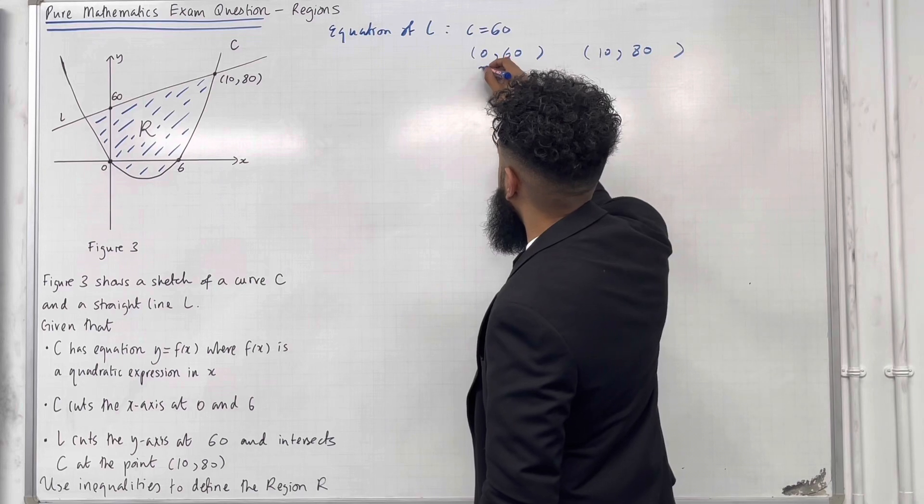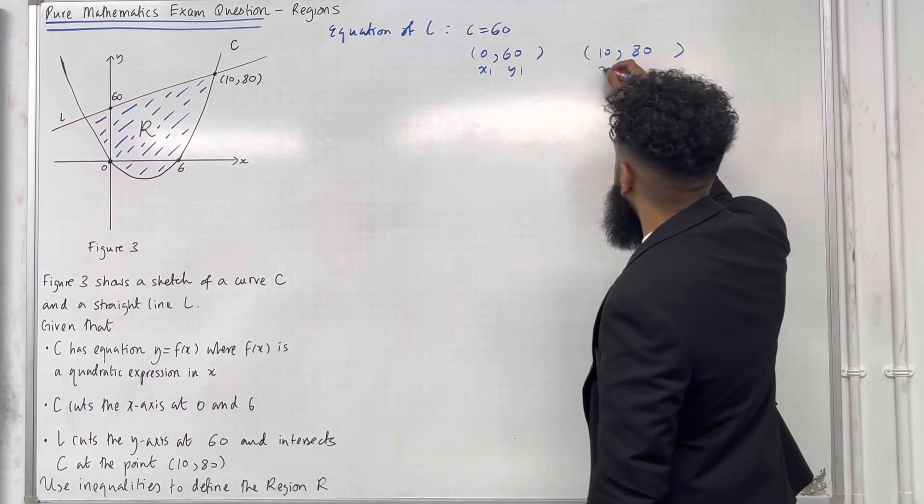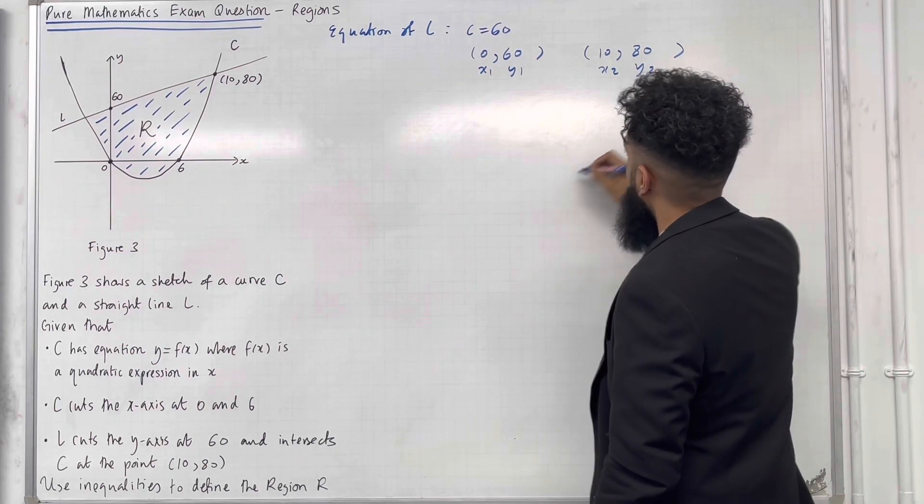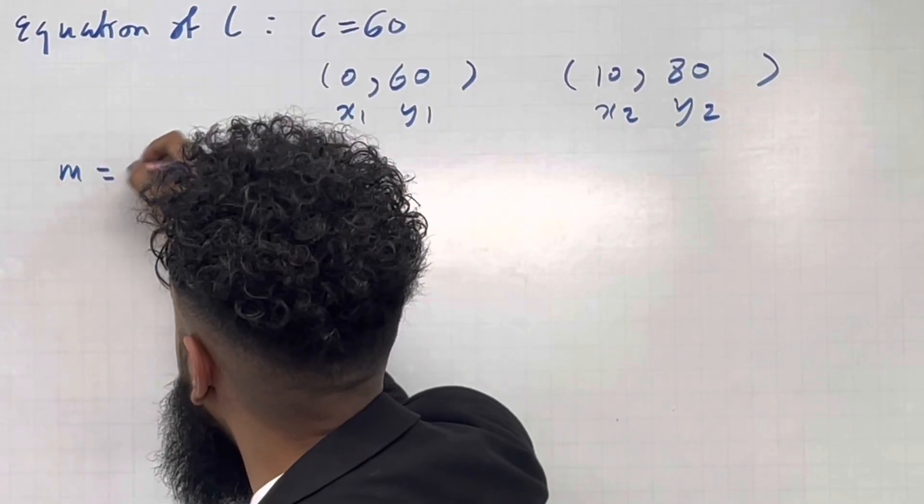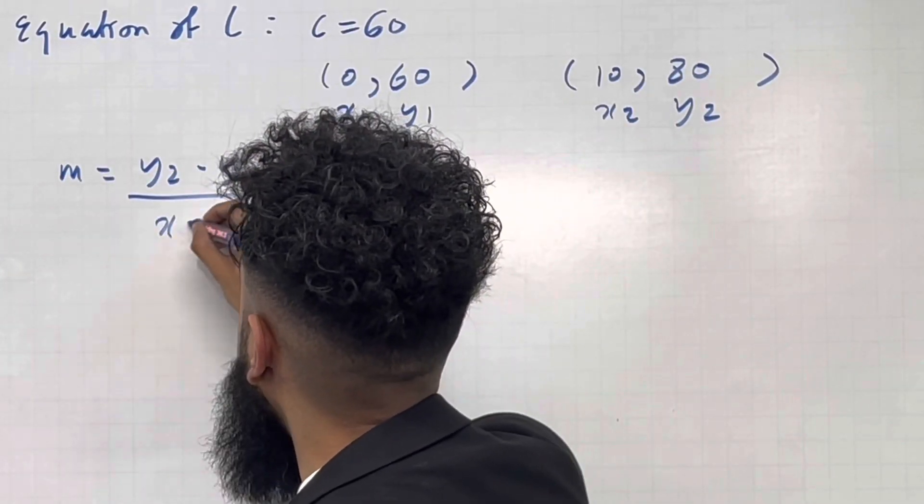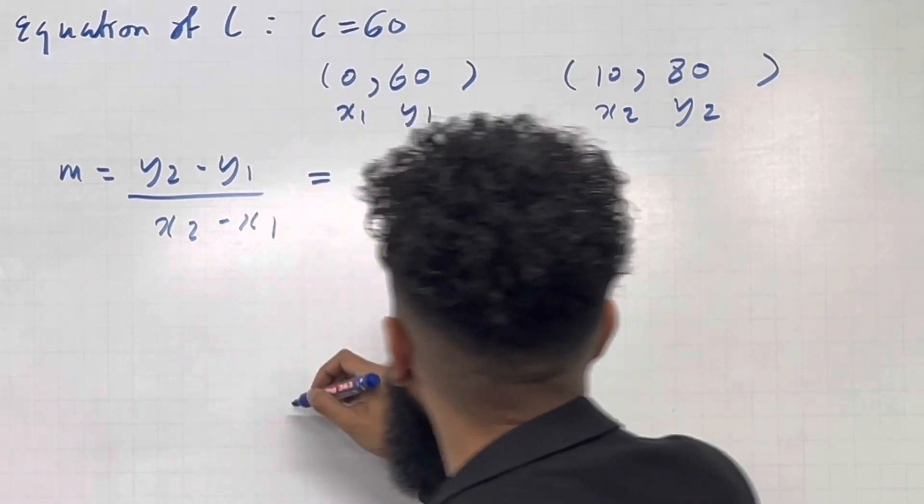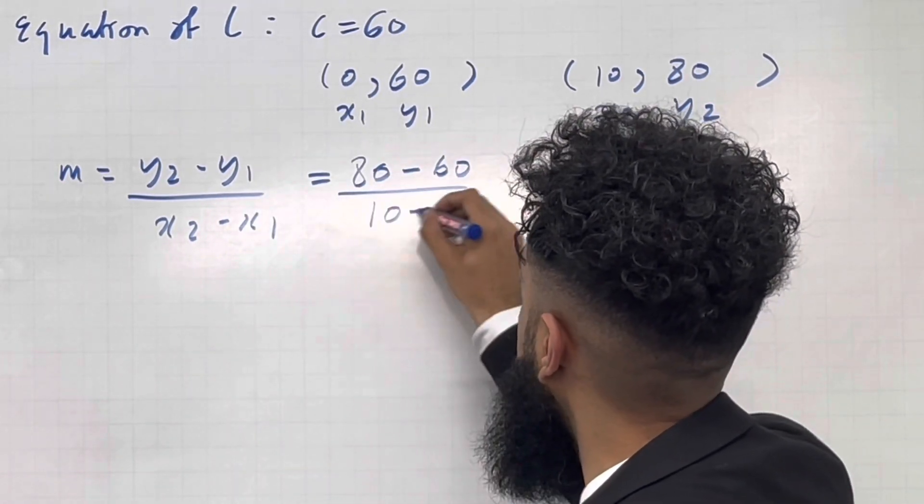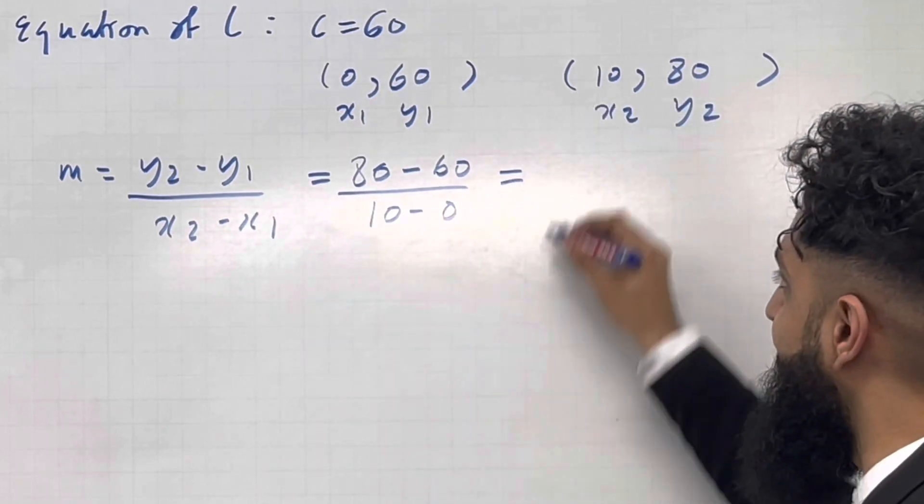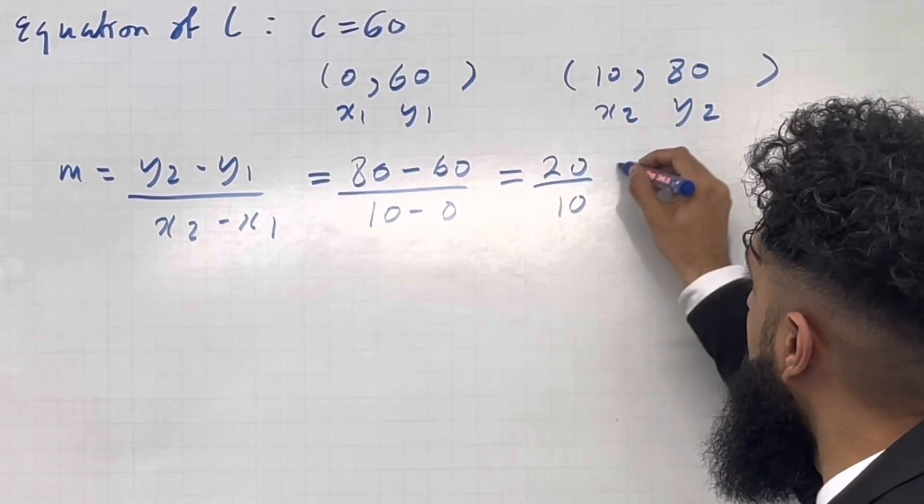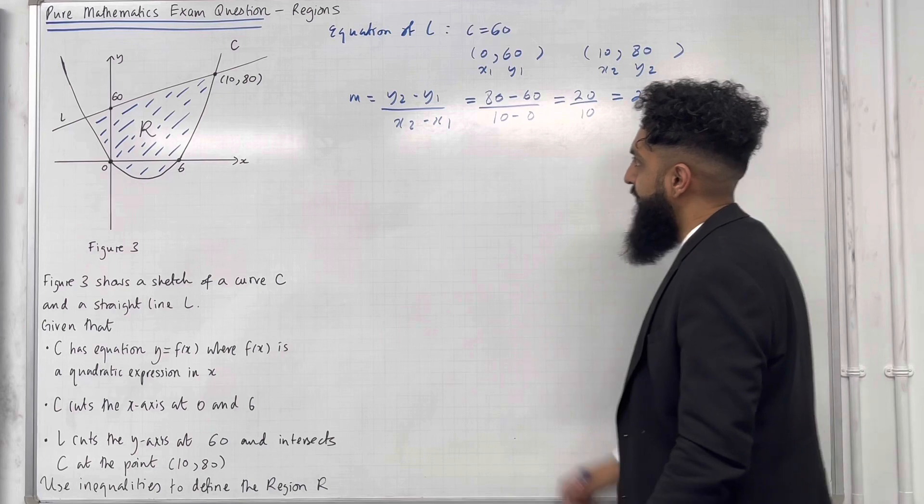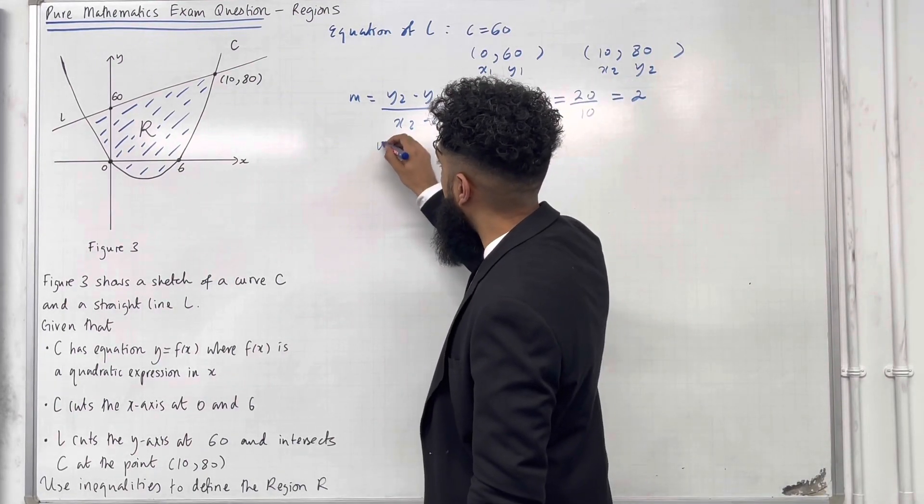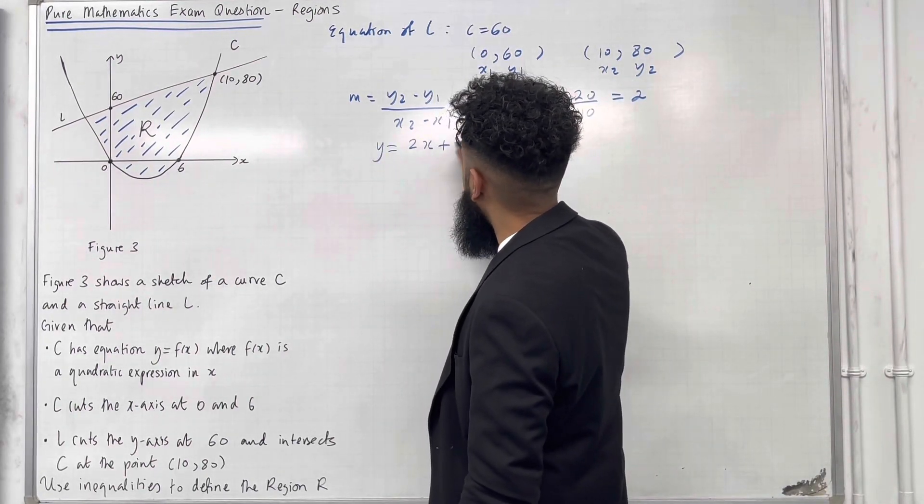I can label the coordinates. So this is X1, Y1 and this is X2, Y2. The gradient M is given by Y2 minus Y1 over X2 minus X1. So I've got 80 minus 60 over 10 minus 0. This gives me 20 over 10 which is 2. Hence the equation of the straight line L is Y equal 2X plus 60.